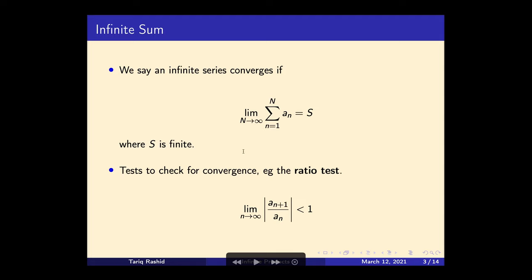We also know that there are lots of tests we can do for convergence. A very common one is called the ratio test, where we compare a term and the term before it — if the ratio is less than one we can say it converges, for example. There are other kinds of tests you can do as well. That's just a refresh on what infinite sums were, and it's useful because we can compare and contrast and draw parallels with infinite products.